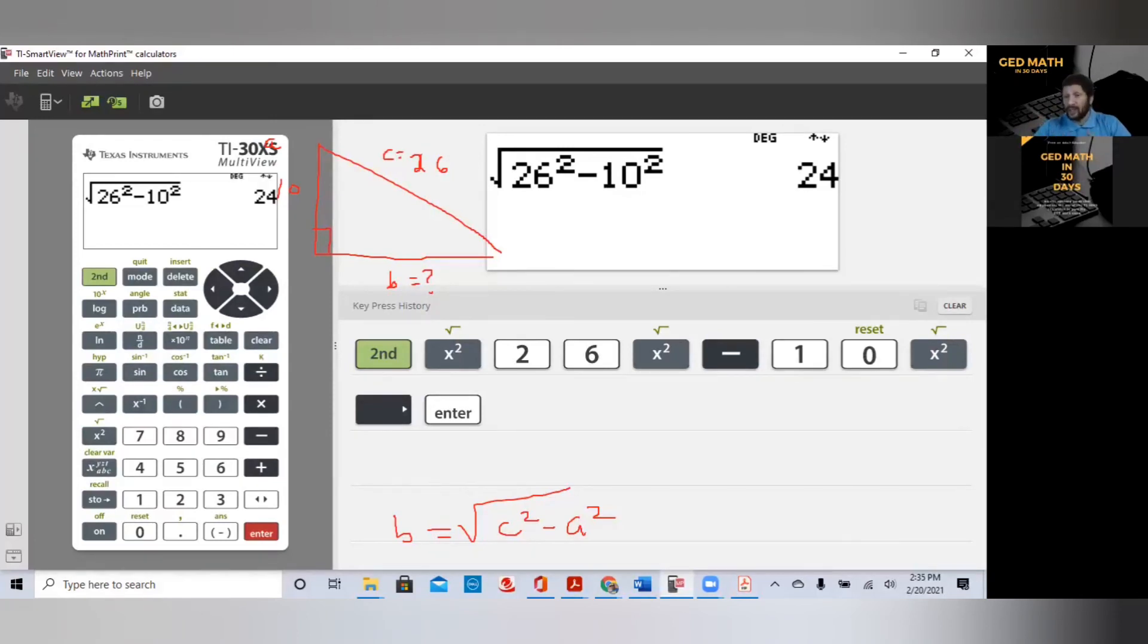Two simple formulas. If you don't know the hypotenuse, the square root of A squared plus B squared. If you do not know one of the legs, it's C squared minus B squared. And if you're missing leg B, it's the square root of C squared minus A squared. Listen, all you have to know is if you're looking for the hypotenuse, you add them. If you have the hypotenuse and you're missing one of the legs, you're subtracting from the hypotenuse. Very easy.